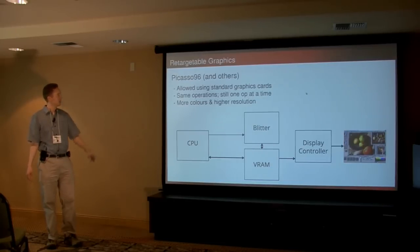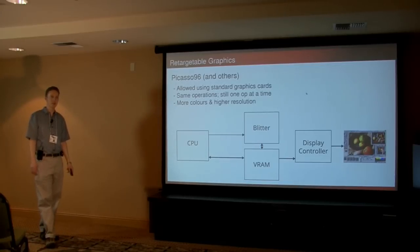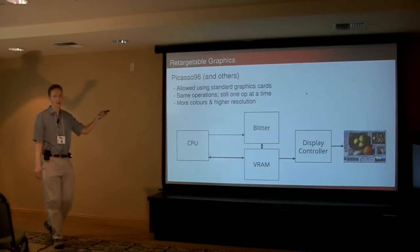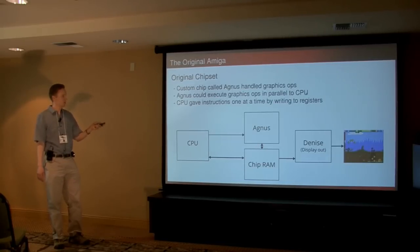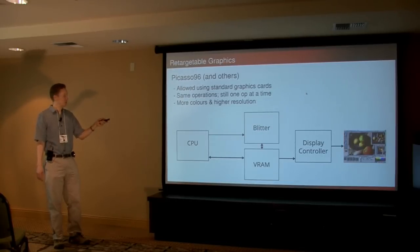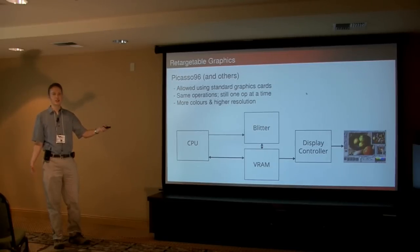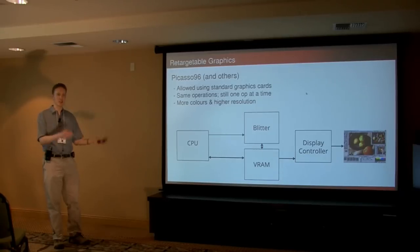The next stage was moving on to retargetable graphics. So Picasso96 for AmigaOS 4, there's CyberGraphics and a few other ones as well. The block diagram is exactly the same — replaced Agnes with the blitter unit, VRAM, and a display controller. The difference is higher resolutions, more colors, that kind of thing. So doing the same thing on more modern hardware.